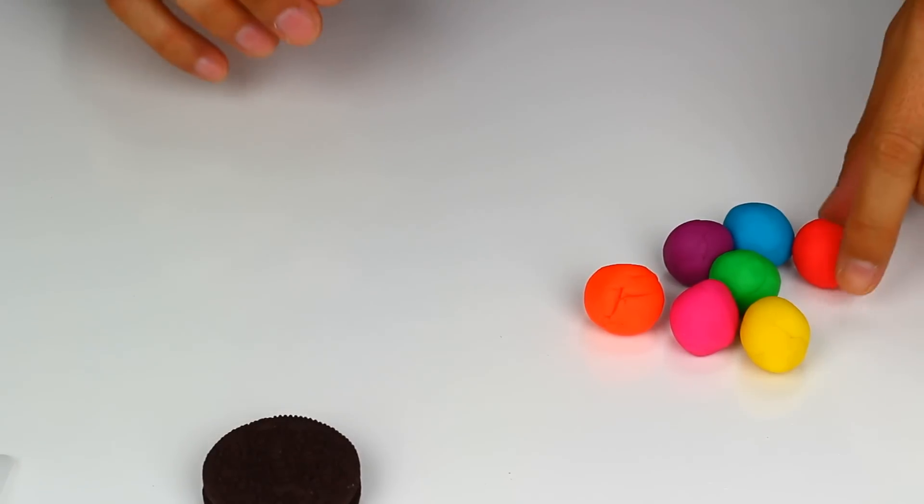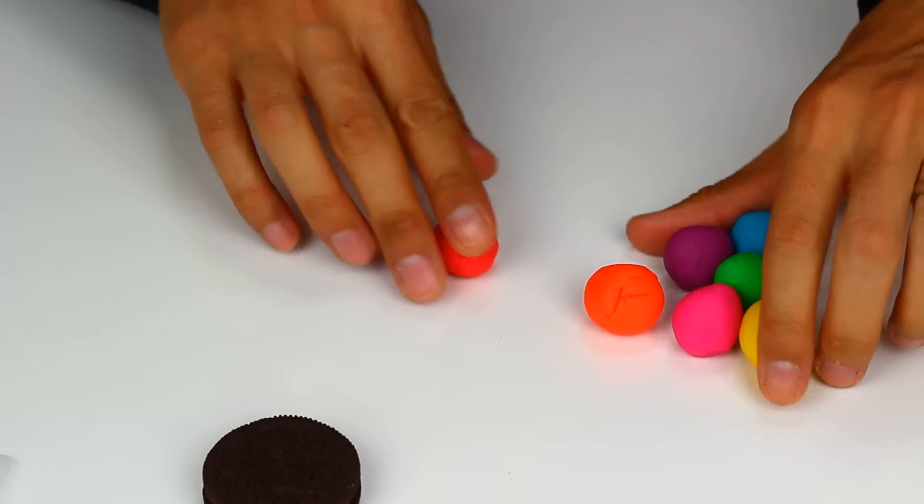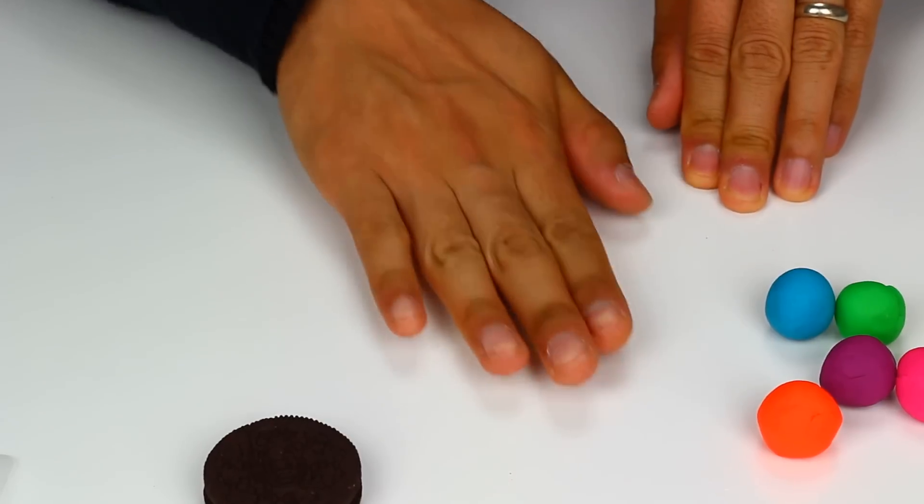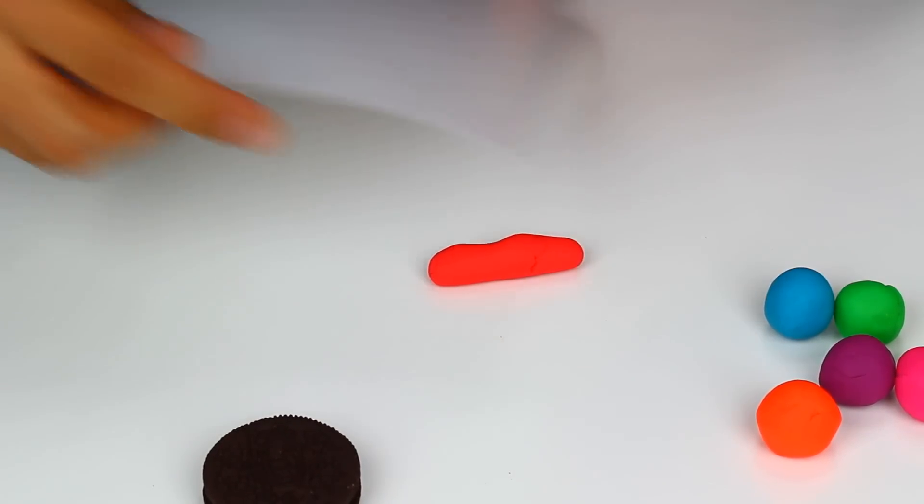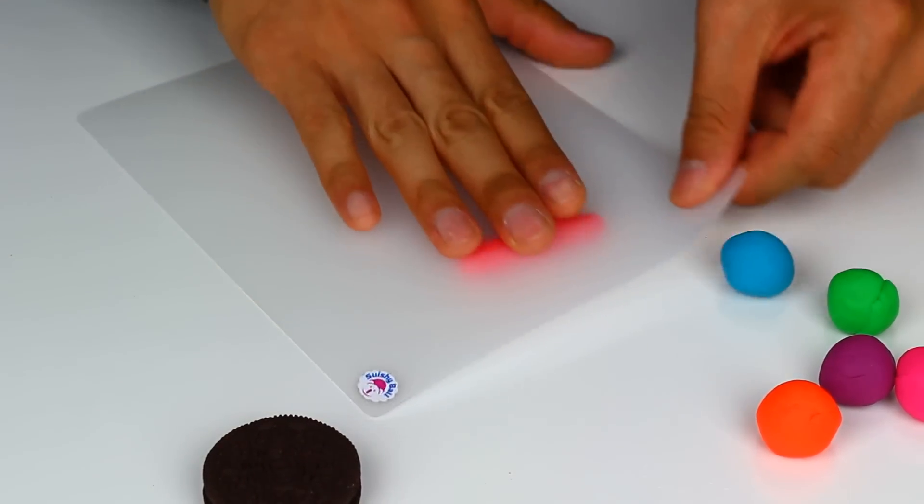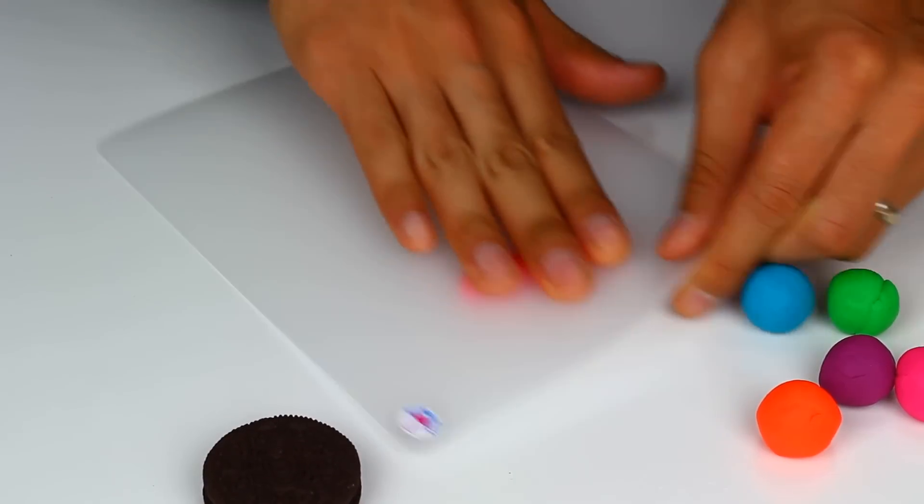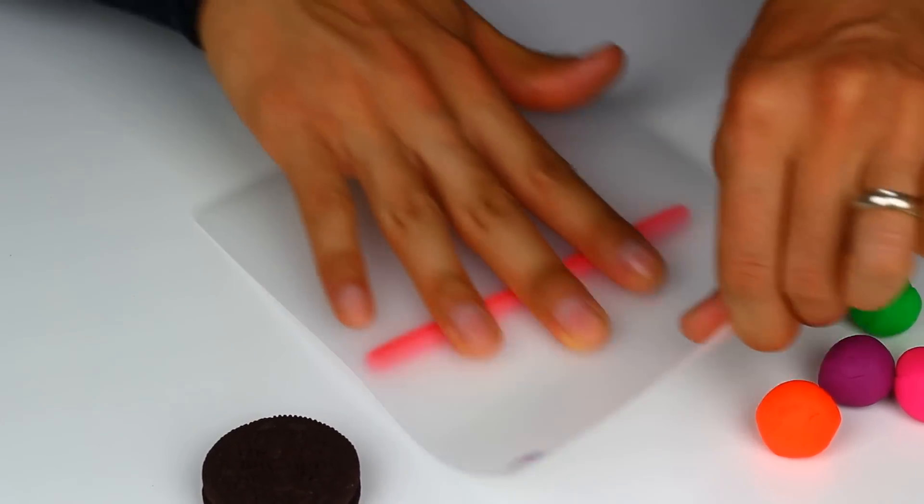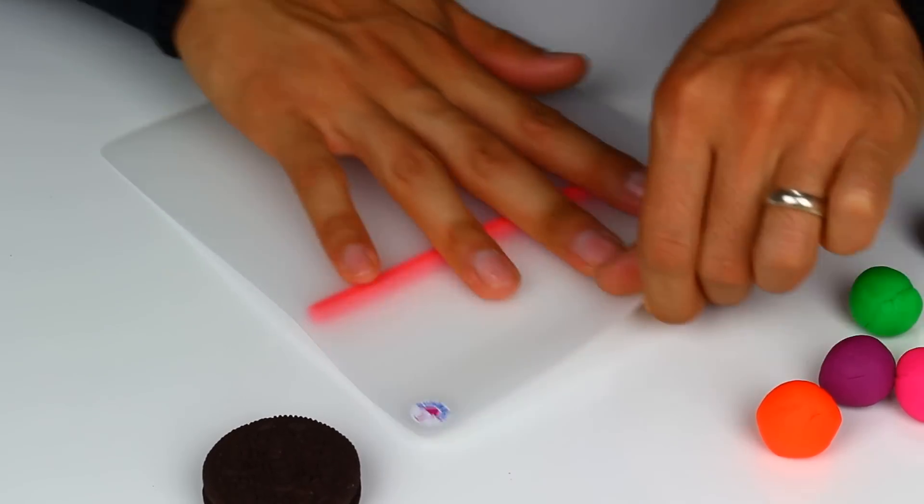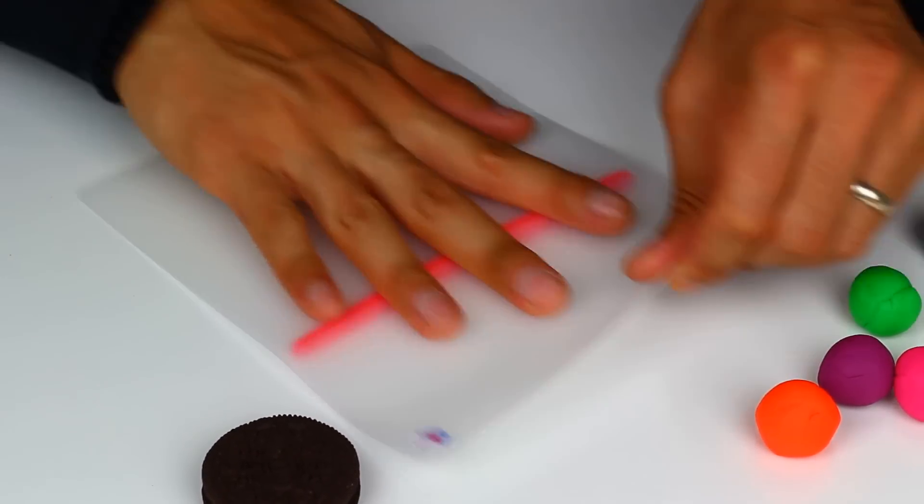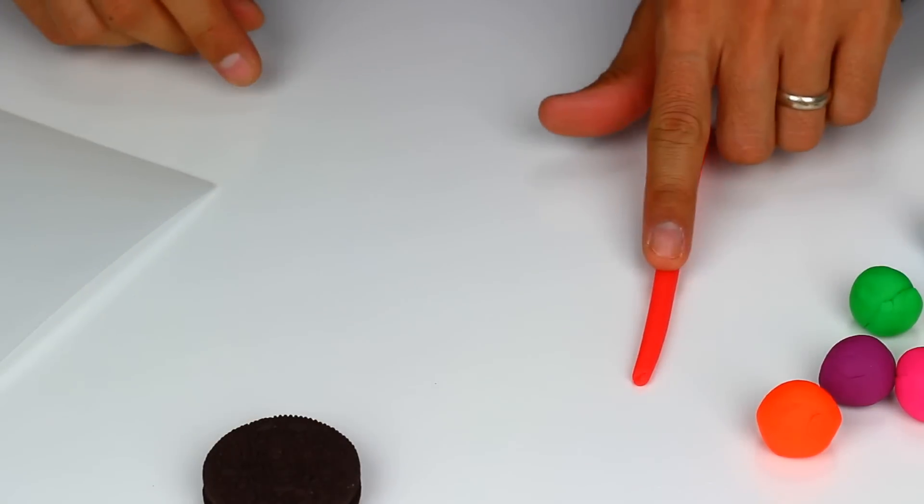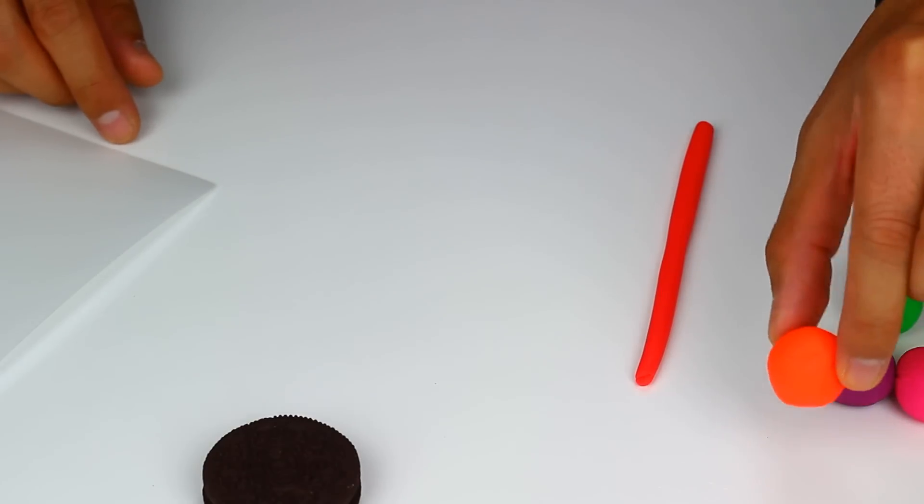To make this Oreo I'm going to first roll these balls of Play-Doh into straight lines. I'm going to roll these lines pretty thin. Okay, so that's pretty thin enough. Next is orange.